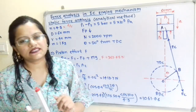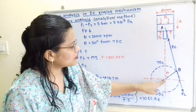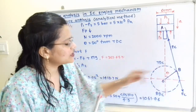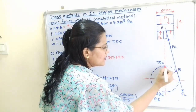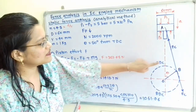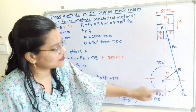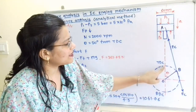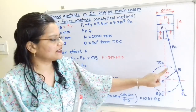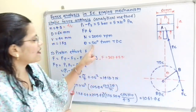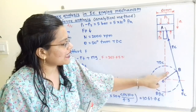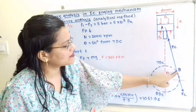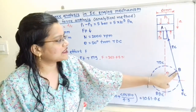Now, if we observe, here is the crank. Point B is initially at TDC — this is the top dead center and this is the bottom dead center. Point B initially at TDC moves through an angle of 50 degrees. So this angle theta equals 50 degrees — this is the position of the crank. AB is known as the connecting rod.